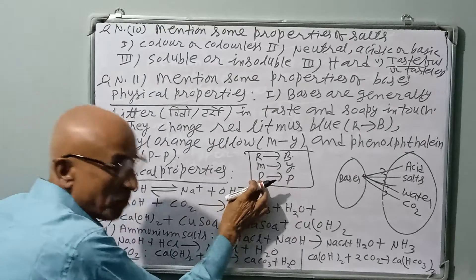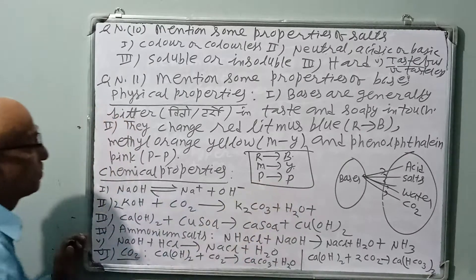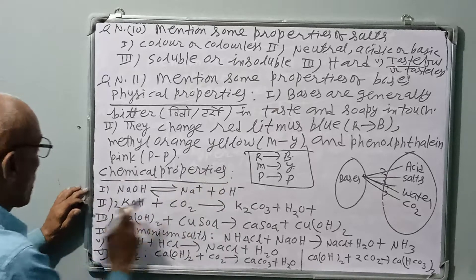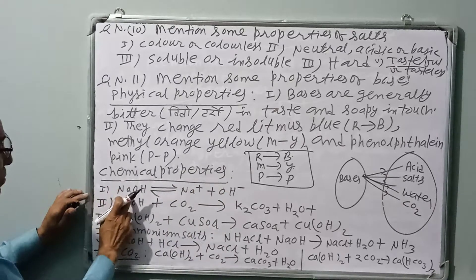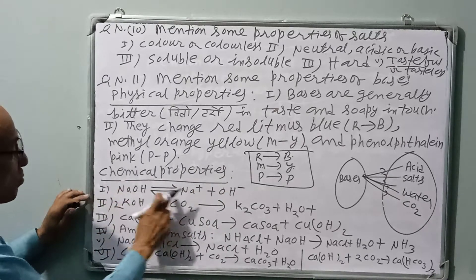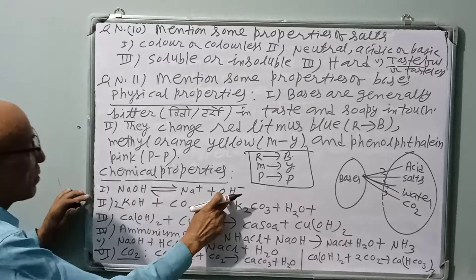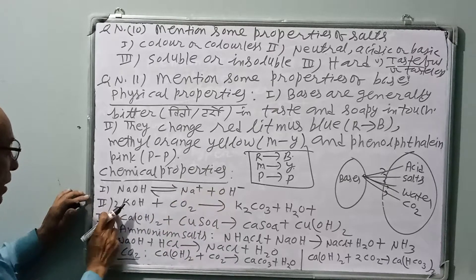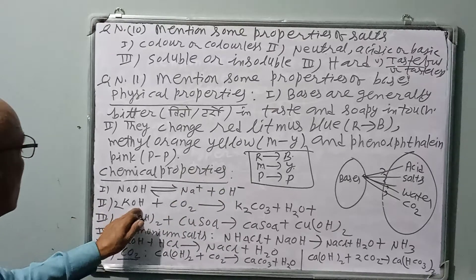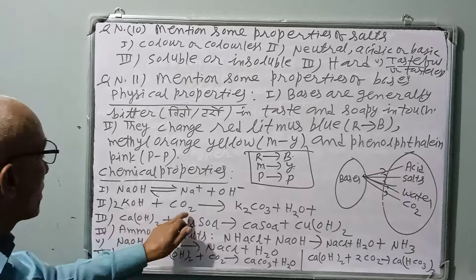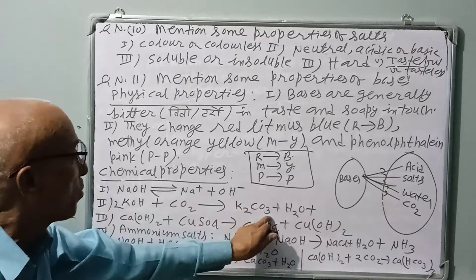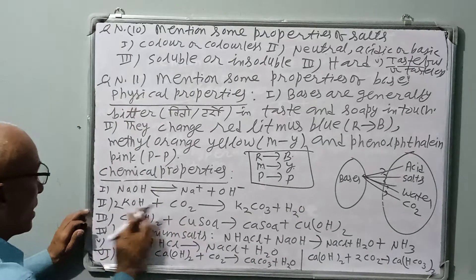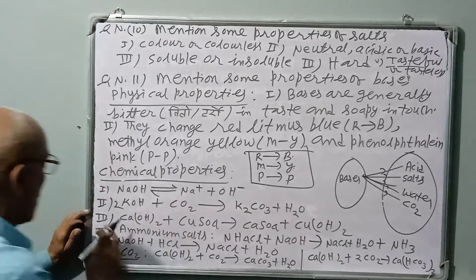Chemical properties: Number one, alkalis or bases produce hydroxide ion (OH-) in water. Another property: bases or alkalis react with carbon dioxide to form salt and water. For example, K2CO3 plus H2O.